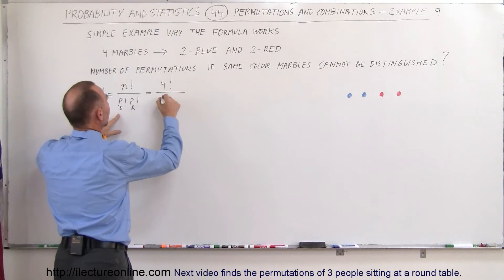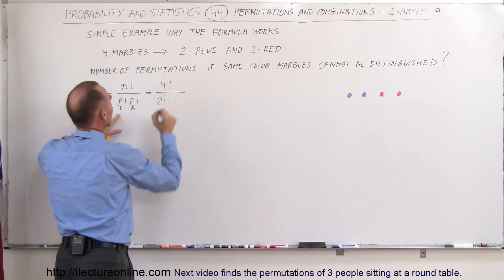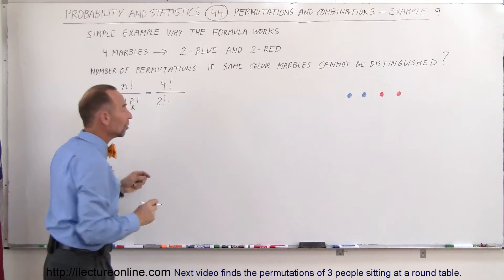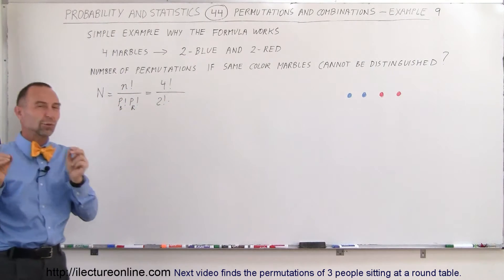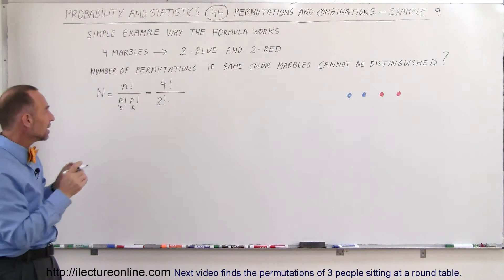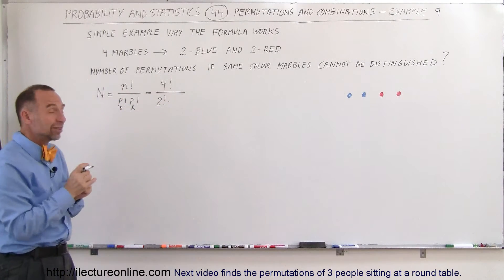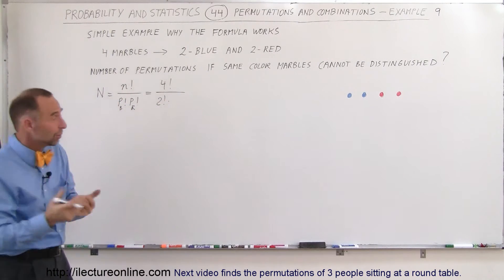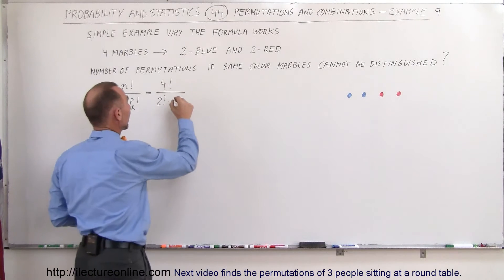that would be 2 factorial. And we multiply that times the number of ways in which the red marbles can be rearranged, and since there's two of them, again that would be 2 factorial.